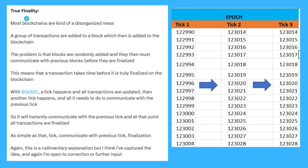So let's talk about true finality and what that means. Most blockchains, if we take the classic example of Bitcoin, are disorganized messes. A group of transactions are added to a block, which is then added to a blockchain. The problem is that blocks are randomly added and then must communicate with previous blocks before they're finalized — they have to communicate with all past blocks and confirm they belong to the chain. Finality on something like Bitcoin can take quite a long time.